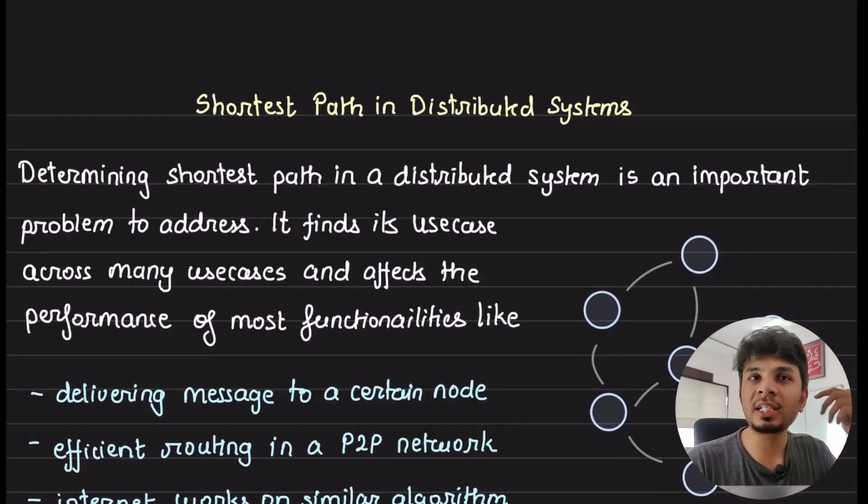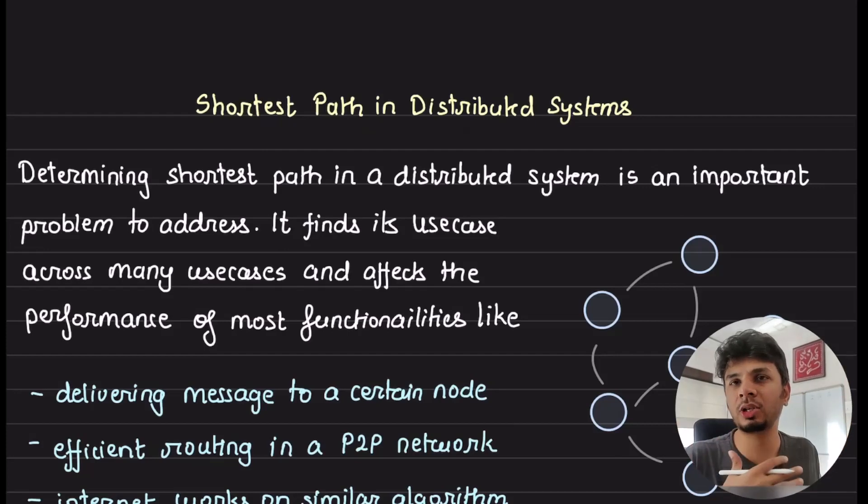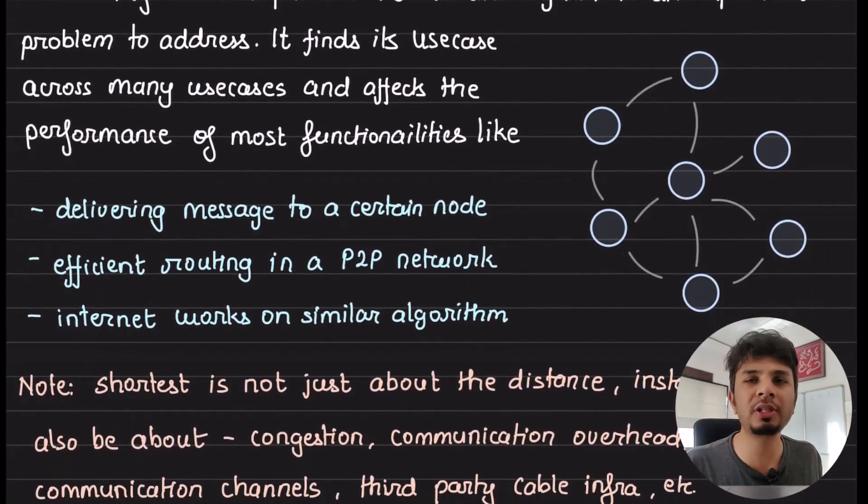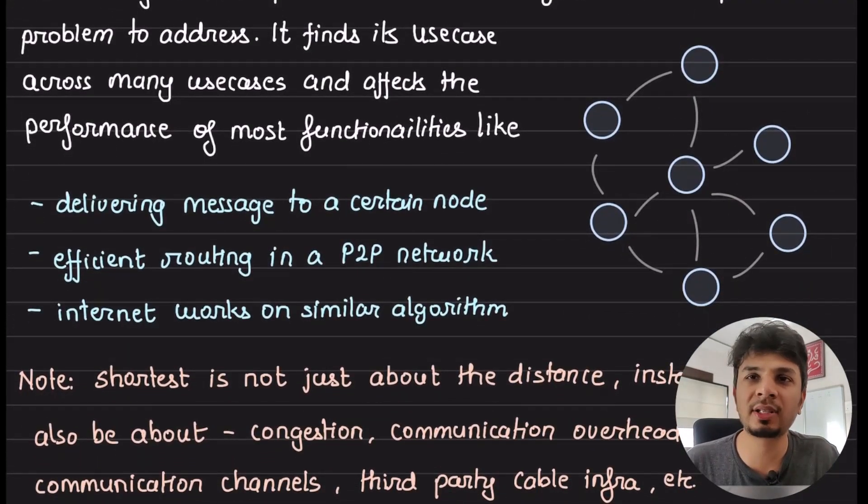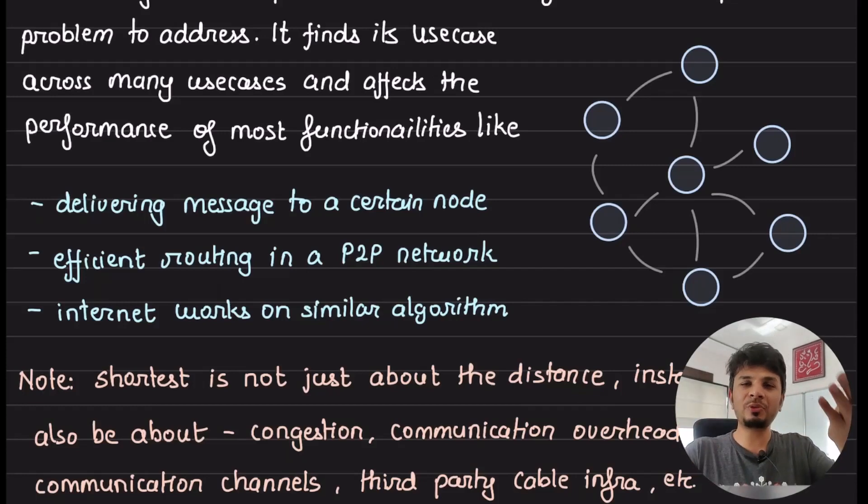Determining the shortest path in a distributed system is critically important because it finds its use case across so many things. Whenever we talk about performance of delivering messages, you think about shortest path first. Some of the functionalities that it powers really well are: let's say you want to deliver a message to a specific node. Given that you don't know the entire topology, how would you do that? That is why you first construct the shortest path from a single node to all the vertices, and then you send it across that.